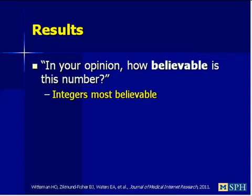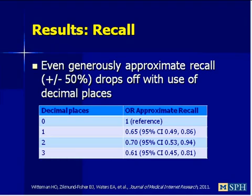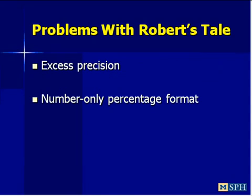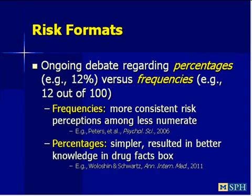Another problem is the format of the risk information. Robert got a single number as a percentage. There is an ongoing debate about whether it is more helpful for people to receive numerical risk information as percentages—for example, 12%—versus frequencies—12 out of 100. Arguments have been made that frequencies result in more consistent risk perceptions, particularly among less numerate people, while recent work by Woloshin and Schwartz suggests that the simplicity of a percentage may result in better knowledge.